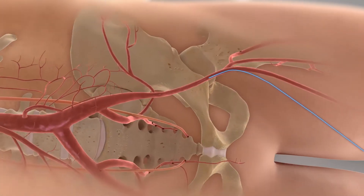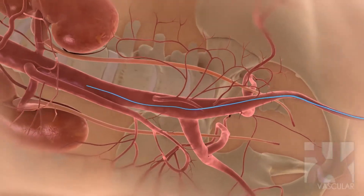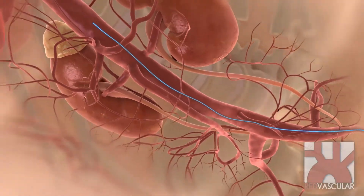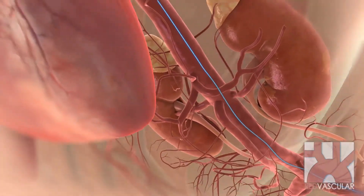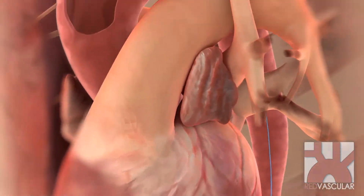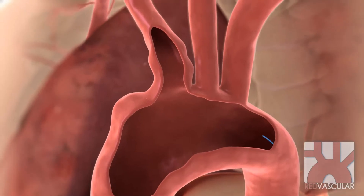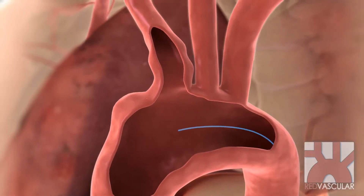Here's how to treat an aortic arch aneurysm that involves the brachiocephalic artery, which we'll call the branch artery. First, place the main guide wire into the aorta from an access site such as the femoral artery.